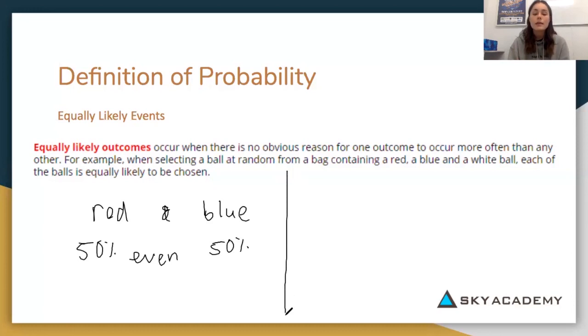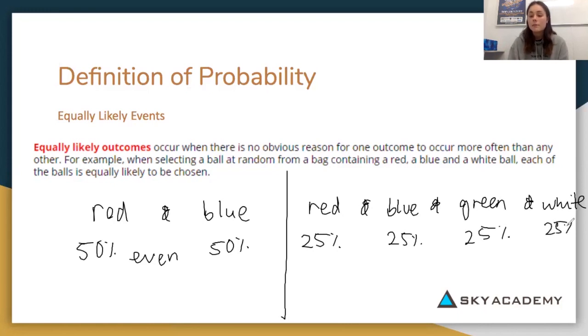However, even doesn't have to be 50%. It can be but it doesn't always have to be. For example, if we have a red and a blue and a green and a white, I have an even chance of selecting all of those. I have a 25% chance of selecting red, 25% chance of selecting blue, 25% chance of selecting green and the same for white.